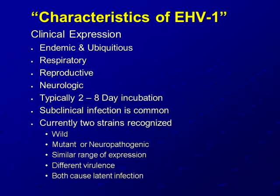In talking with Dr. Timoney last week, it's interesting that the mutant strain may really have been the genesis for the wild strain. So we don't know which one really was the chicken or the egg, but with the advent of PCR and the recognition of the two different strains, these terminologies have become kind of universal. There's a similar range of expression in both virus variations, but there is certainly a difference in virulence, and both do cause latent infection.